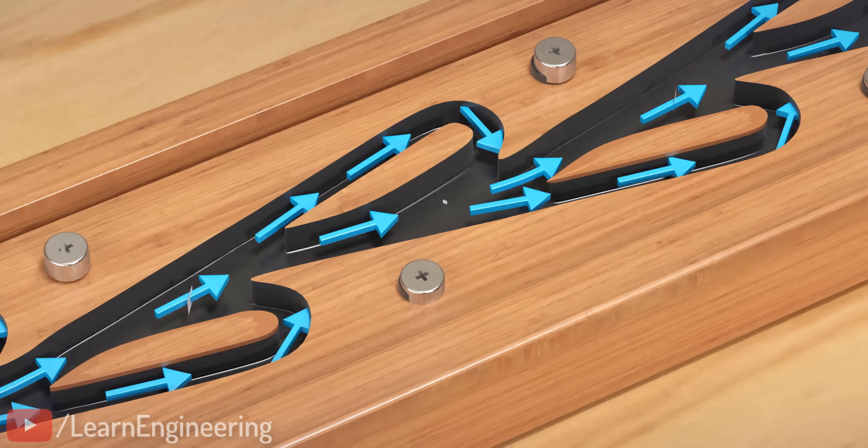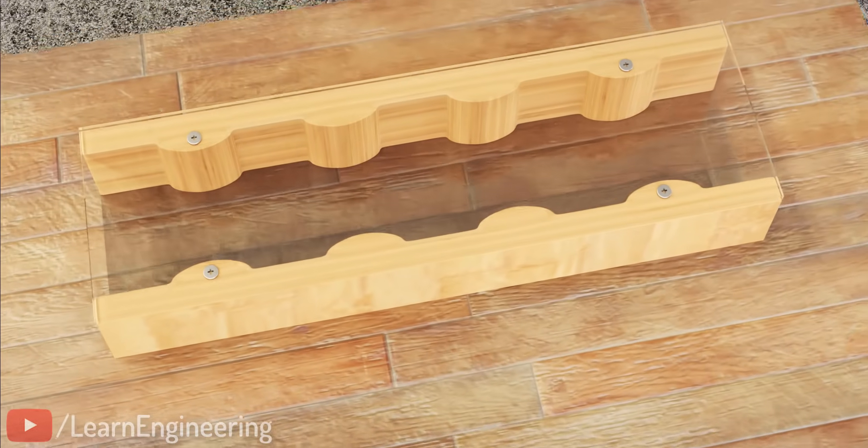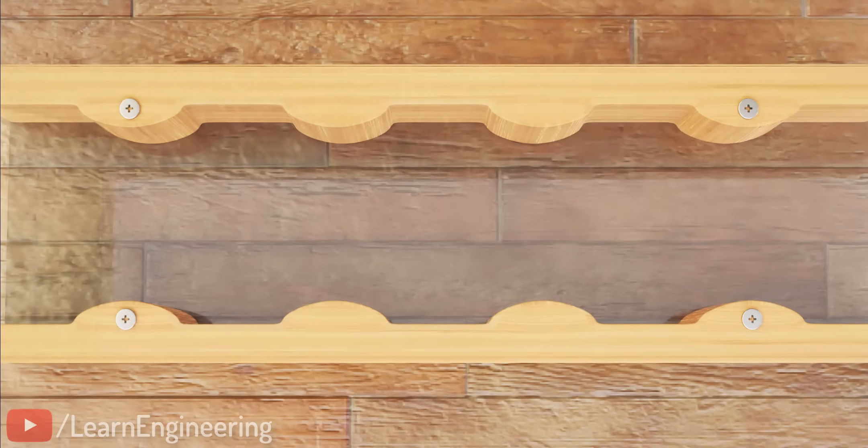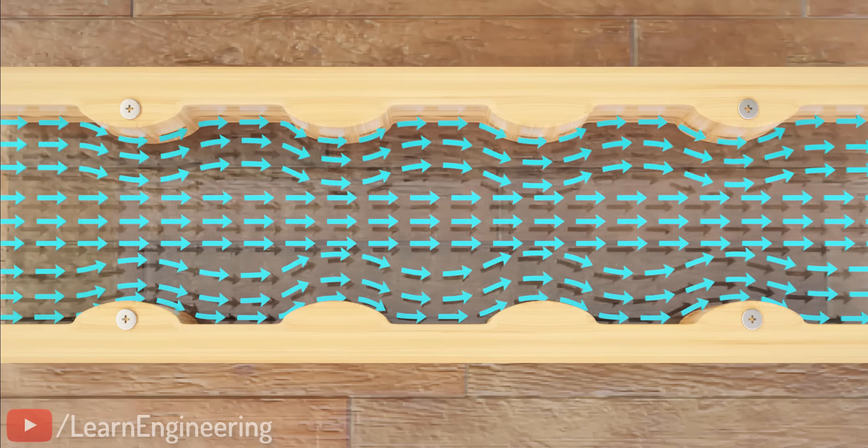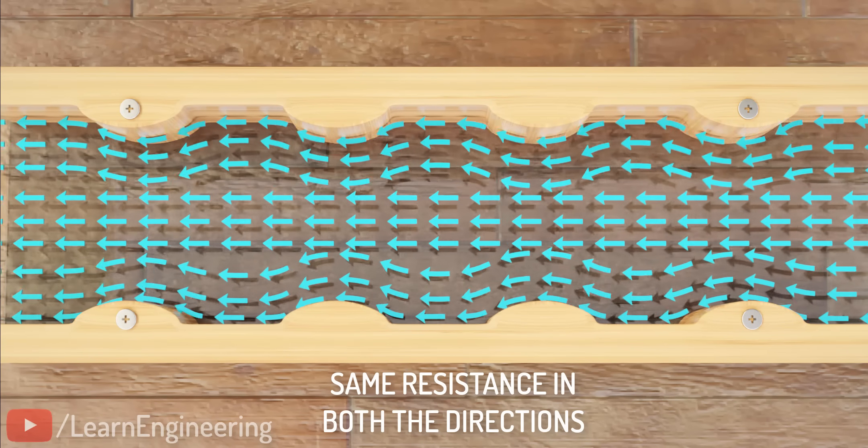Let's consider this design, a simple channel with some undulations on the walls, as shown. These types of undulations provide the same amount of resistance to flow when fluid enters from any side.